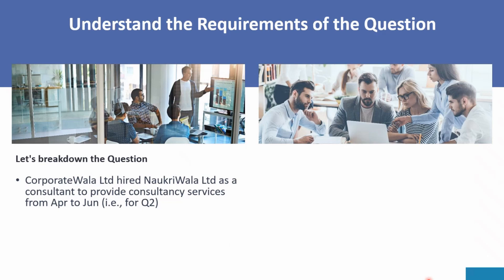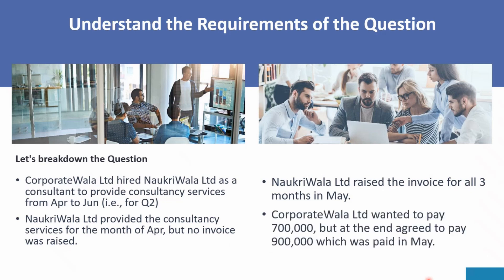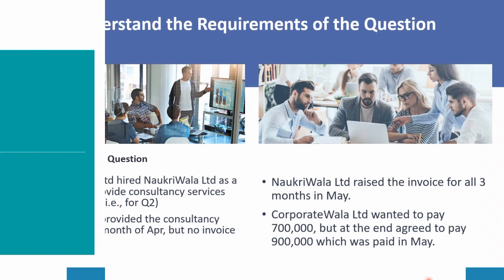The months are April to June because in India we follow the financial year for accounting. In the US or UK, they follow the calendar year, so their second quarter would be April, May, June. Naukriwala provided consultancy services for the month of April but no invoice was raised in April. The invoice was raised for all three months in May. Corporate Wallah wanted to pay seven lakh rupees but agreed to pay nine lakh rupees, paid with the invoice in May.